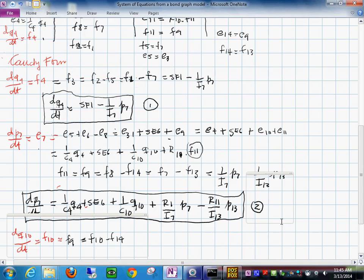Here we go. This is the third equation, and that would be f dq10 dt is f10 equals f9.